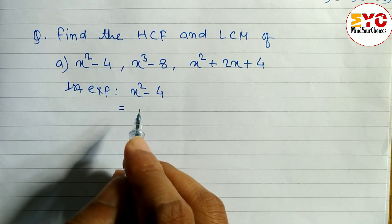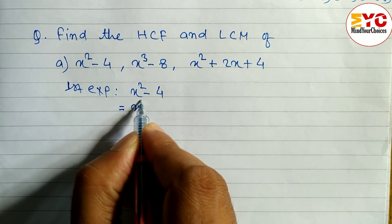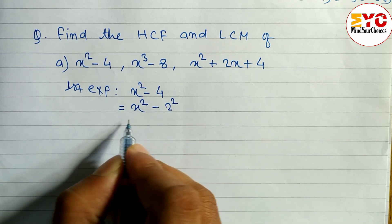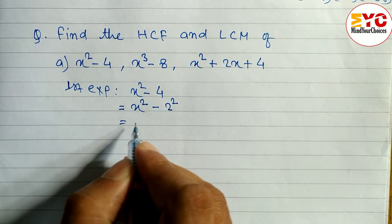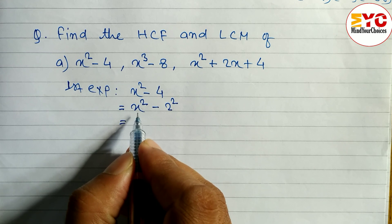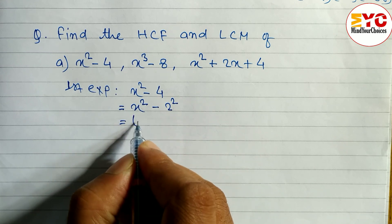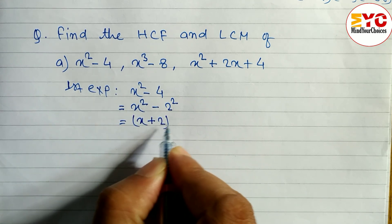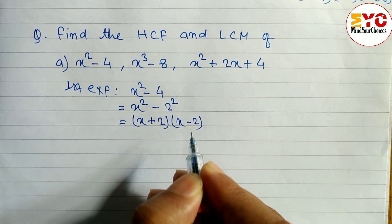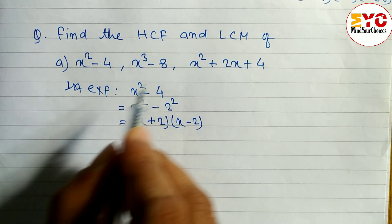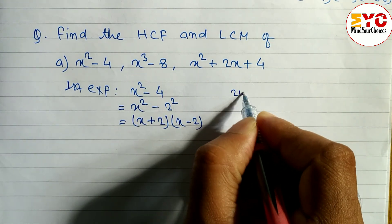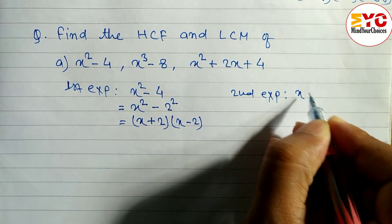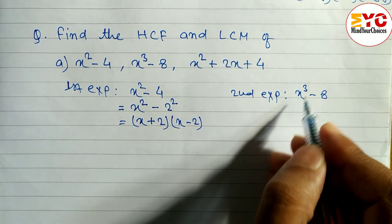The first expression is x² - 4. We convert this using the formula a² - b², where 4 means 2², so we write x² - 2². Applying the formula (a + b)(a - b), we get (x + 2)(x - 2).